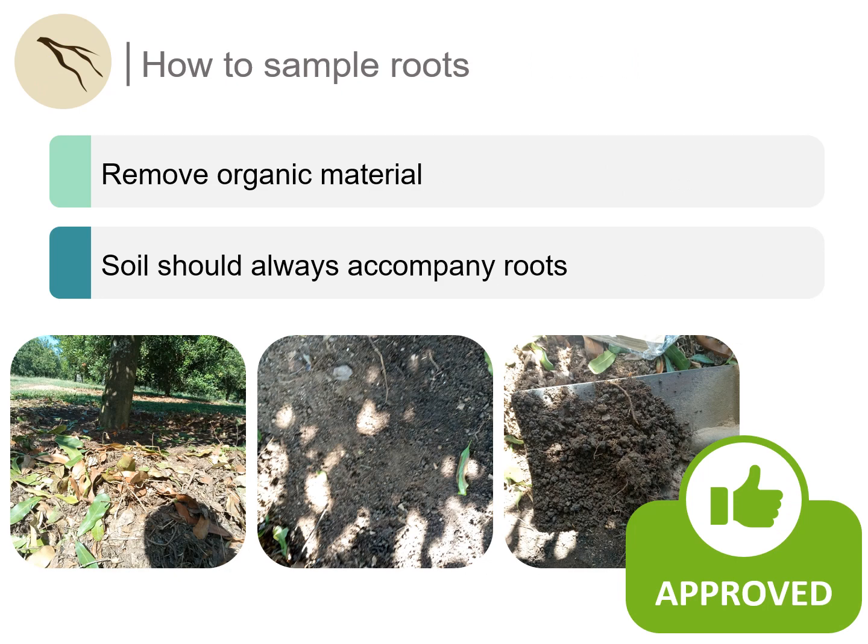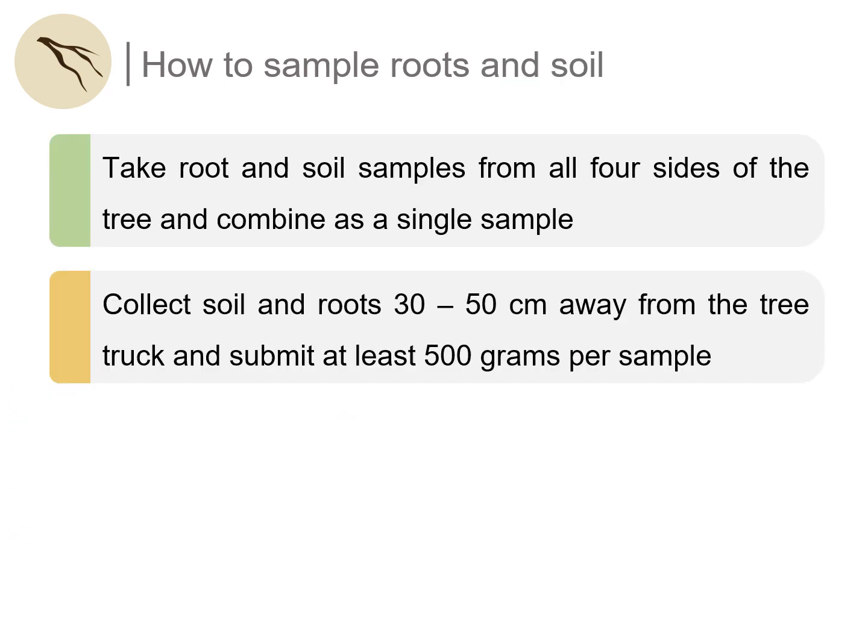The last two slides cover some information on how to sample roots. Always remove the organic material. When you send in roots, please also add some of the soil with the root sample. Make sure that you collect both roots and soil from all four sides of the tree, at least 30 to 50 centimeters away from the tree trunk.